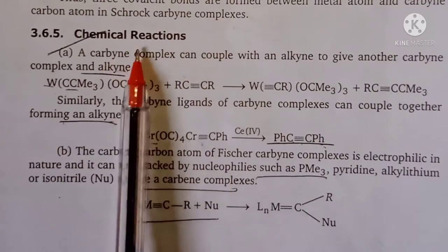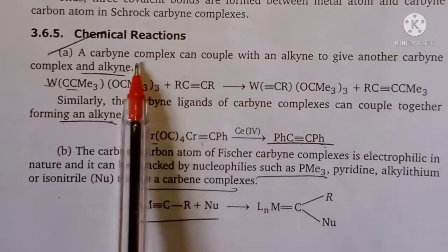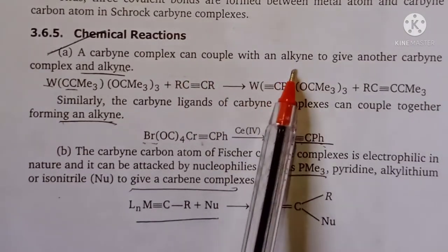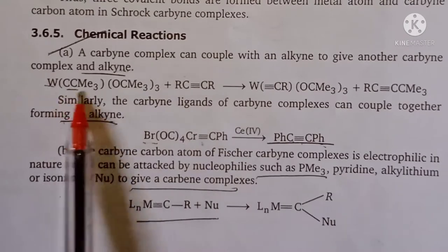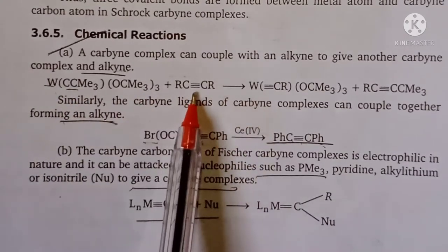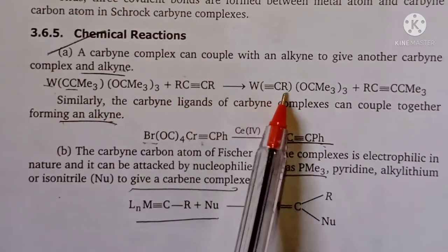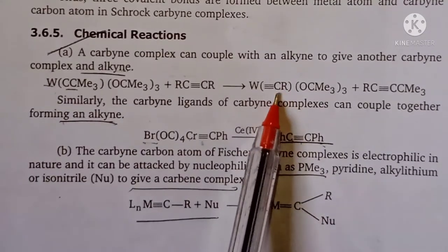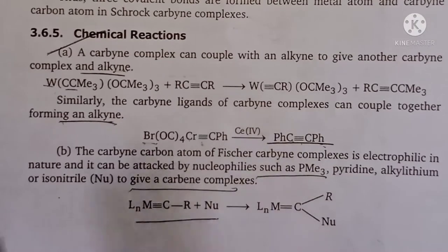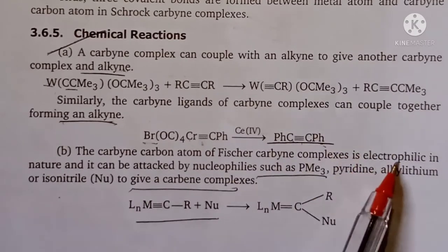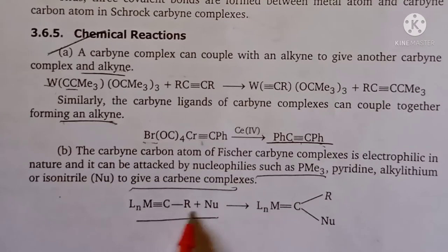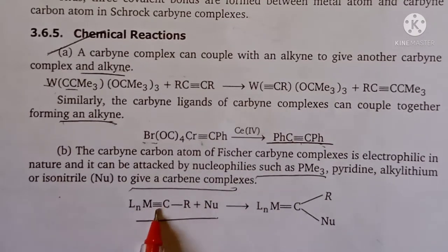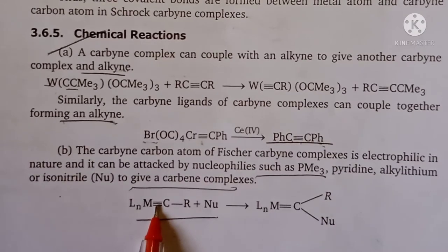Next we will see the chemical properties. You have a carbyne complex at the carbon center. An alkyne can attack, and depending on the attacking group, the complex can convert or transfer to give a transition metal carbyne complex product. In Fischer carbyne complexes, the behavior is electrophilic — so any nucleophile can attack. You have the Fischer carbyne complex and the nucleophile attacks, the bond breaks, and the nucleophile attaches.